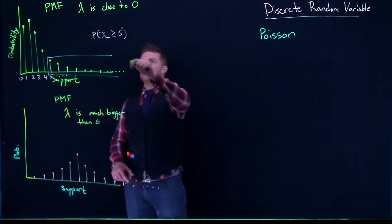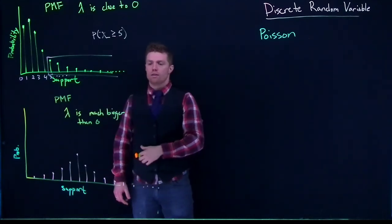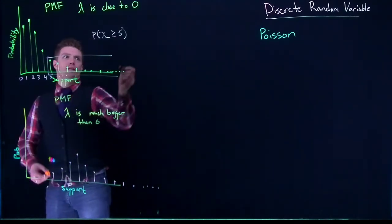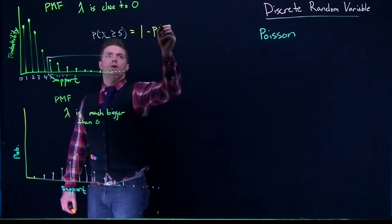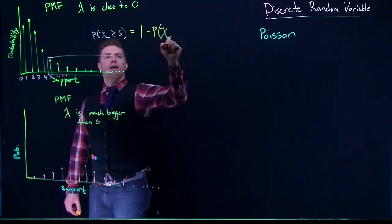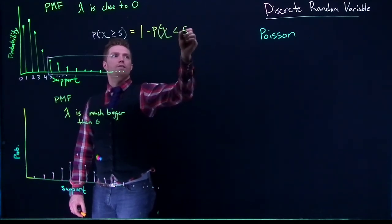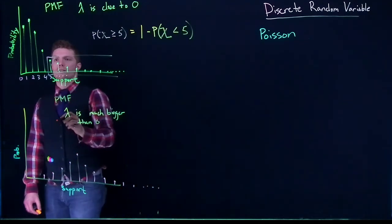So again, remember that when we ask these questions of like the greater than or greater than or equals to, what we need to do is we need to find the complement first. And we can do one minus the probability of X being less than five, which is a complement of being greater than or equal to five.